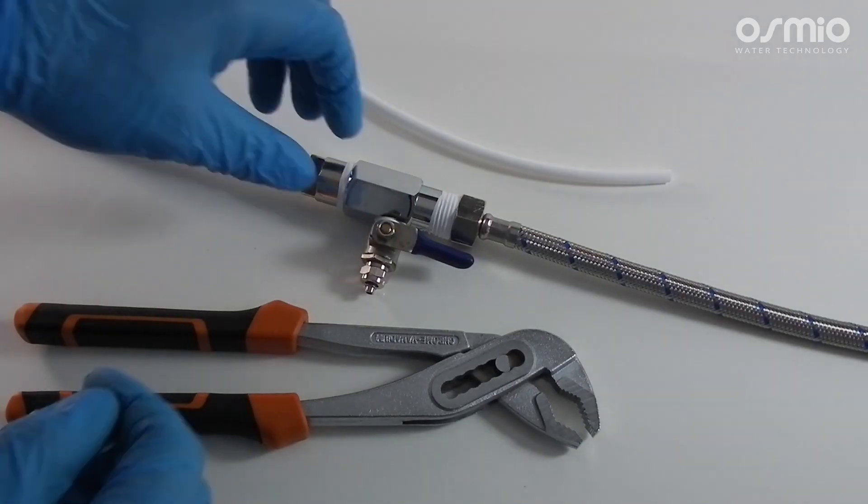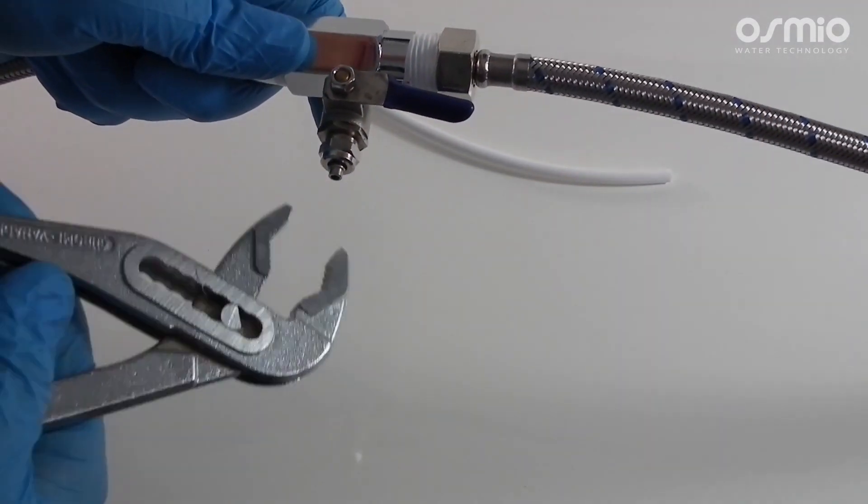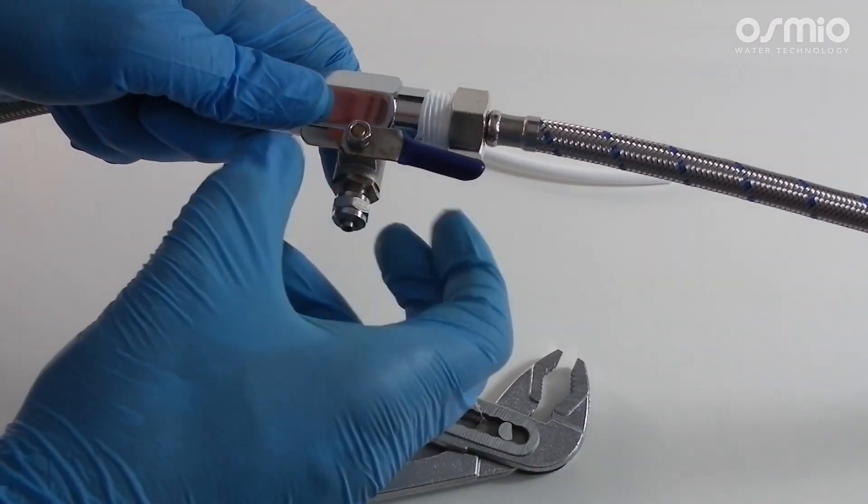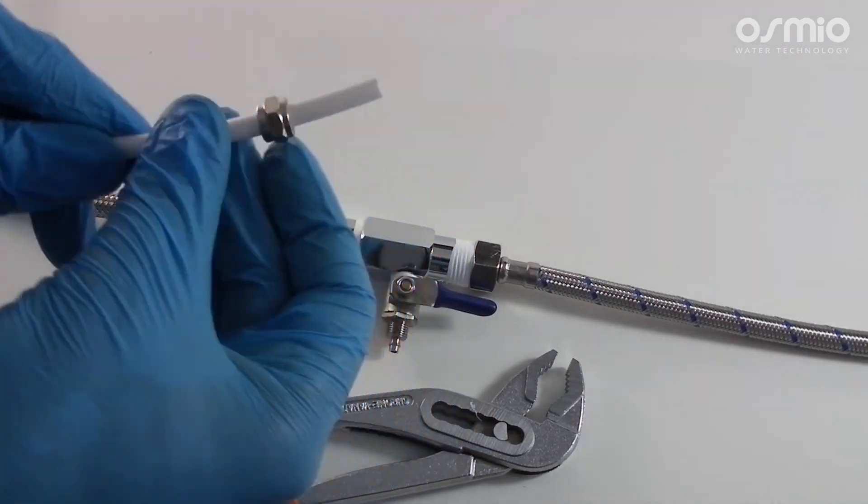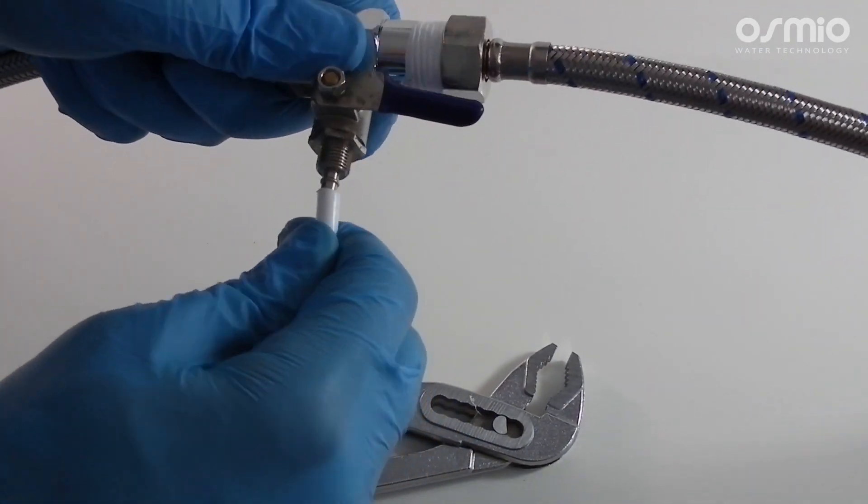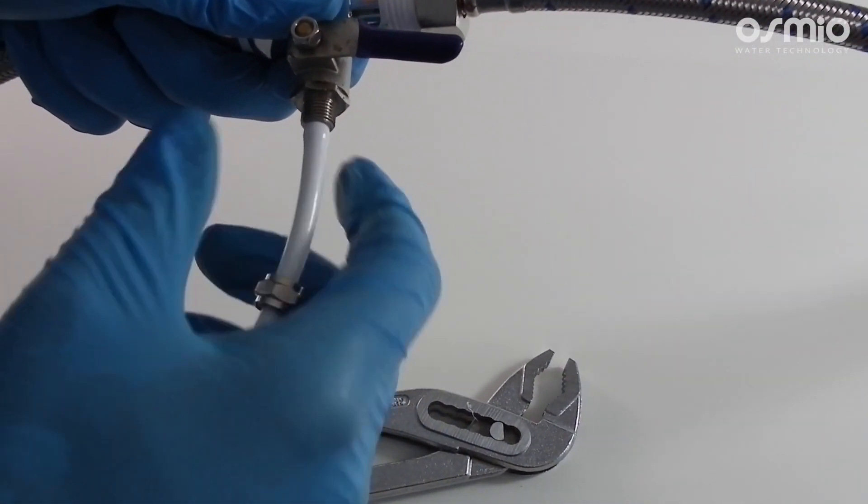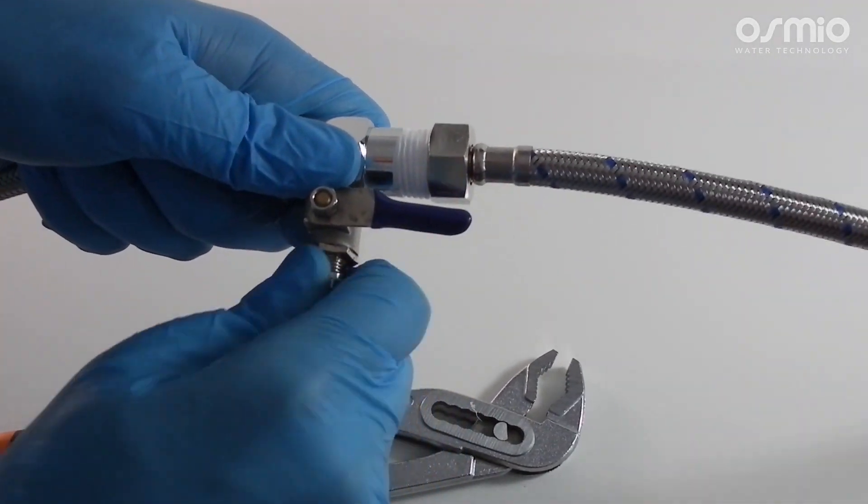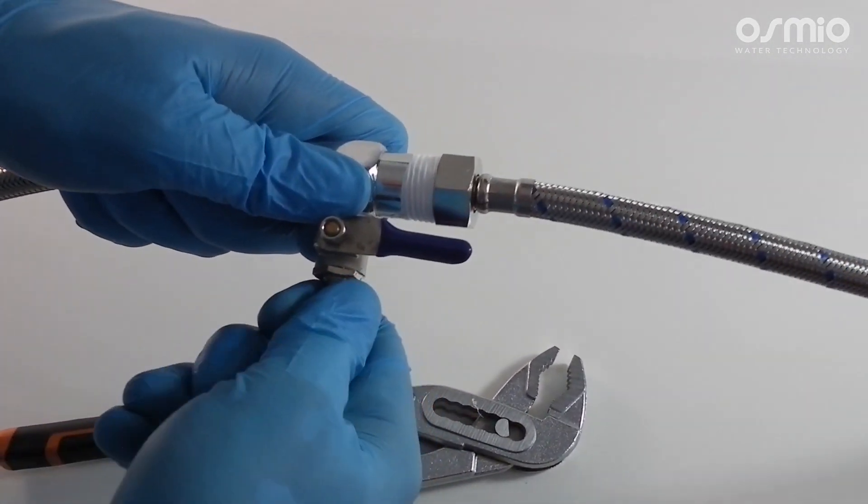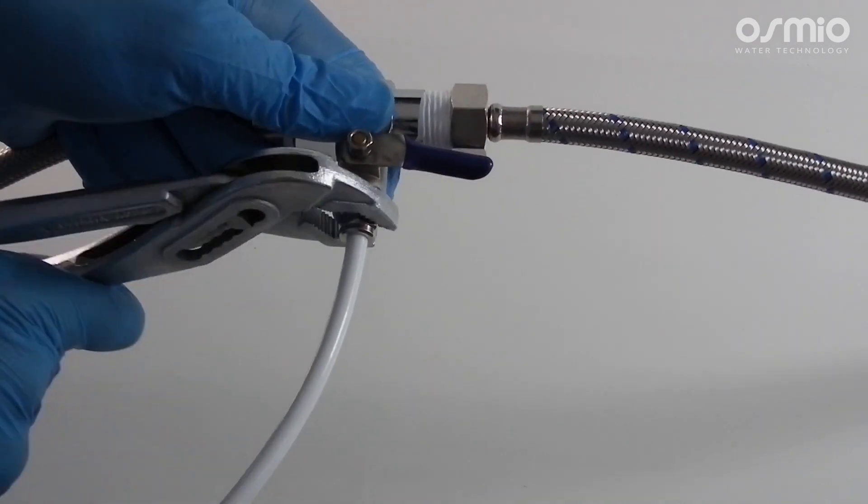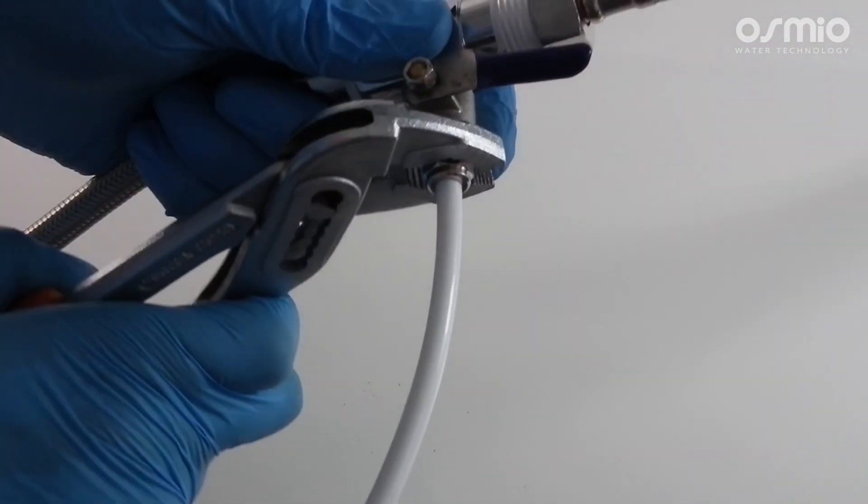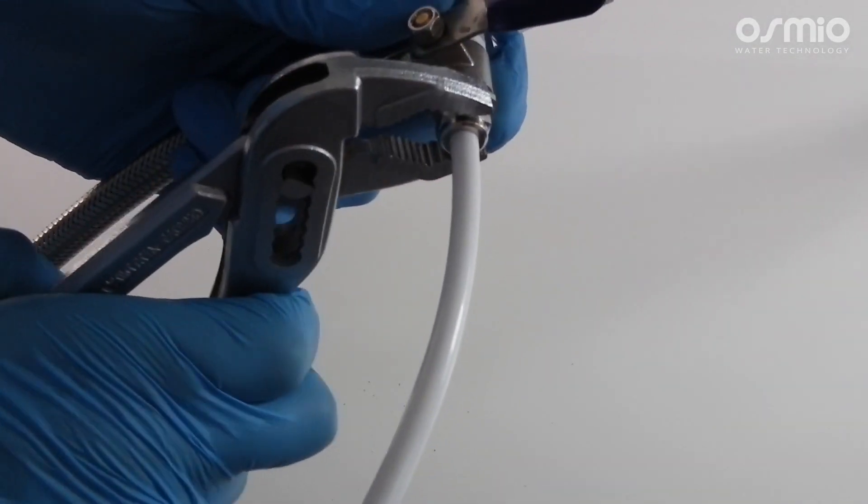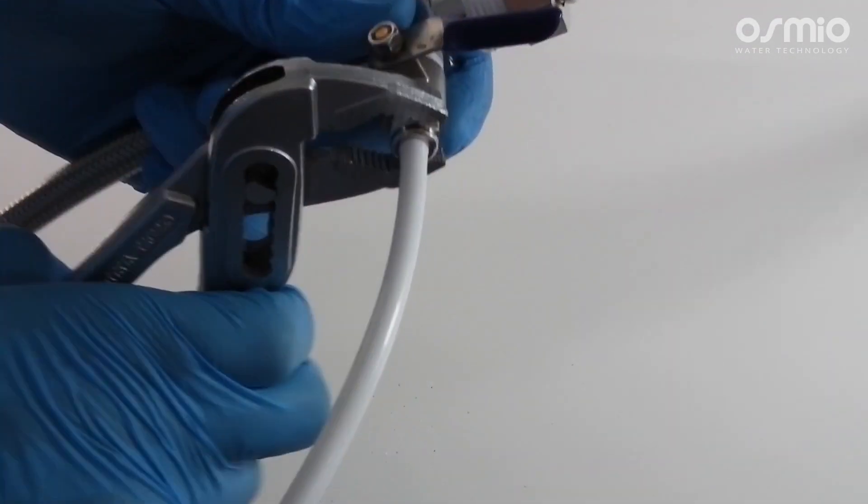Now we can connect the white feed water tubing to the ball valve. First remove the fastening nut using the spanner if necessary. Slide the nut on the white tubing, then push the tubing onto the stem on the ball valve, and finally tighten the fastening nut with the spanner.